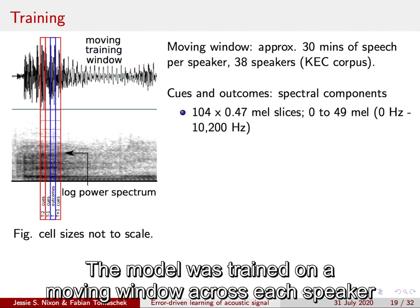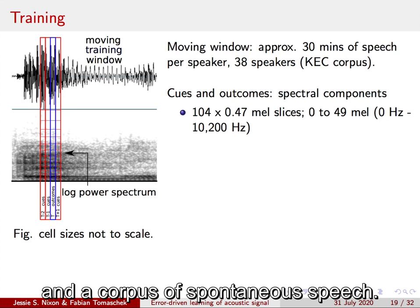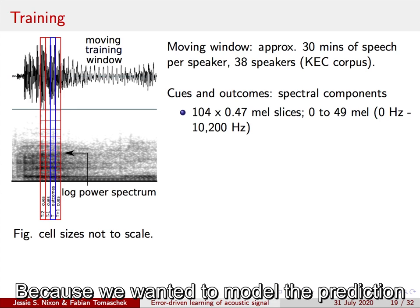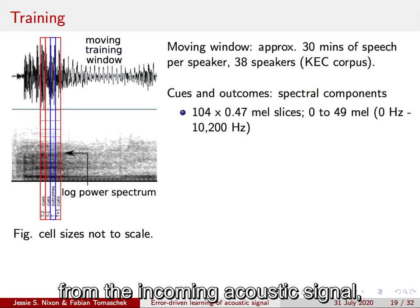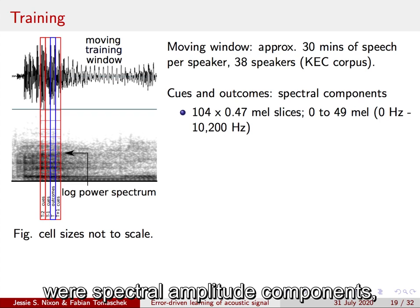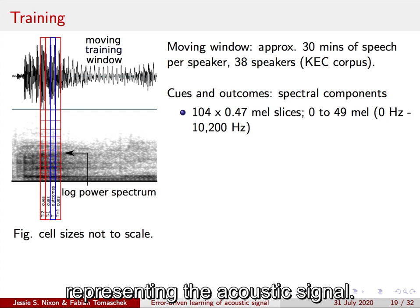The model was trained on a moving window across each speaker in a corpus of spontaneous speech. Because we wanted to model the prediction of upcoming acoustic signal from the incoming acoustic signal, both cues and outcomes were spectral amplitude components representing the acoustic signal.